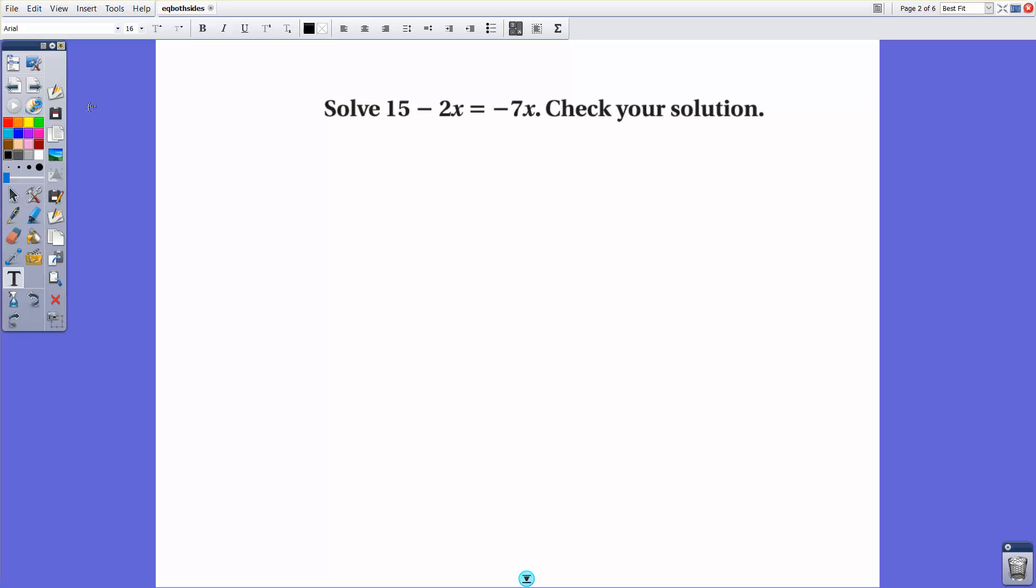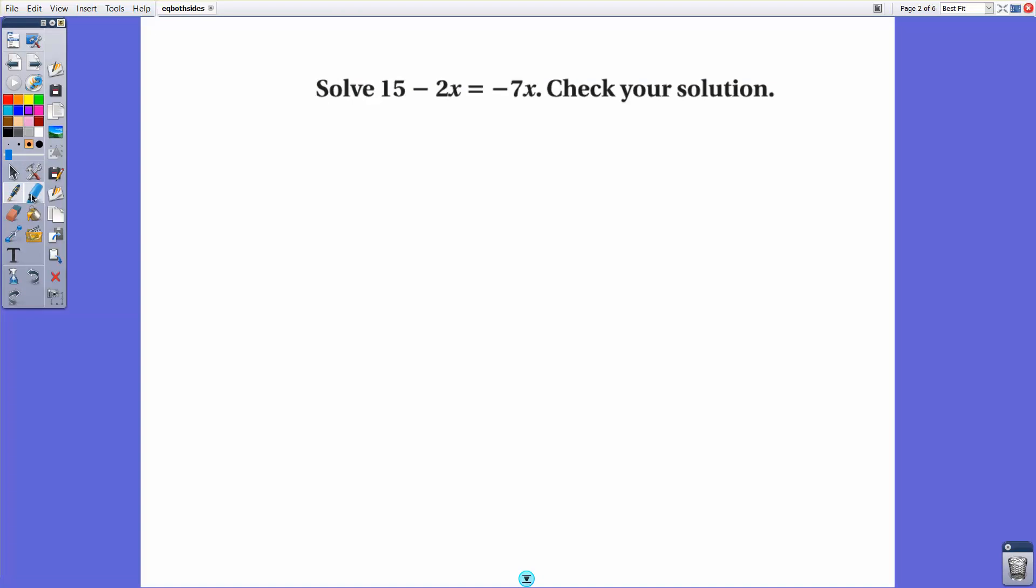15 minus 2x equals negative 7x. So our goal here is to find out what x equals. In this particular equation, we have an x on the left and we have an x on the right. Now when we have variables that are on both sides of an equation, our first objective is to make sure that we collect all of those variables onto one side.